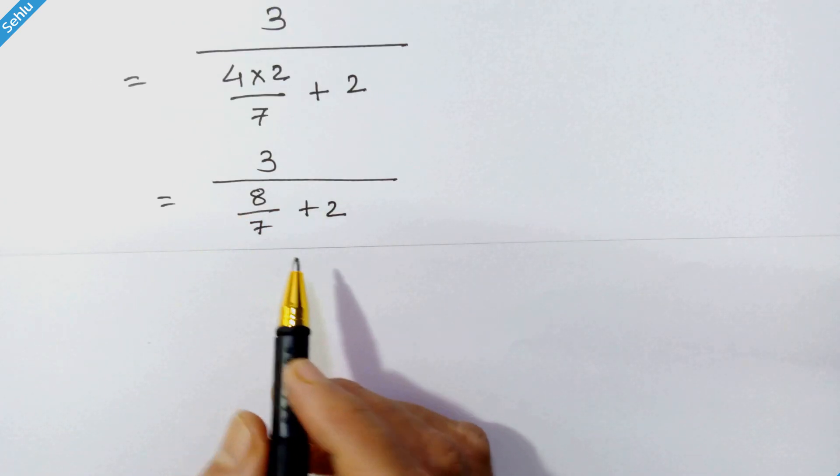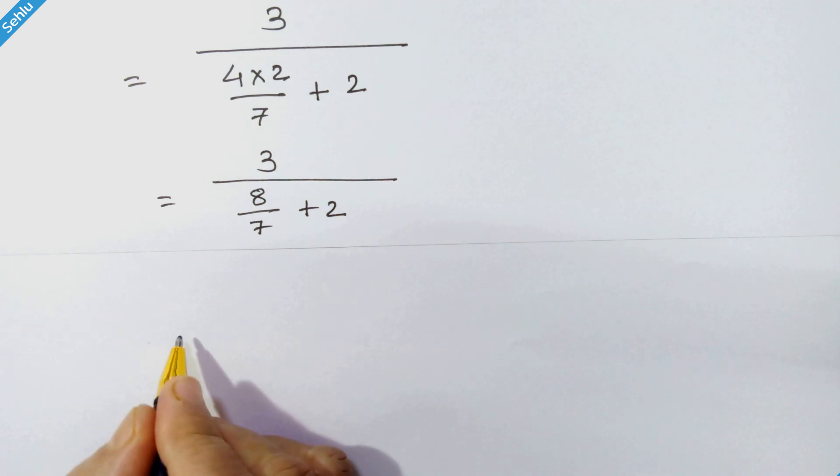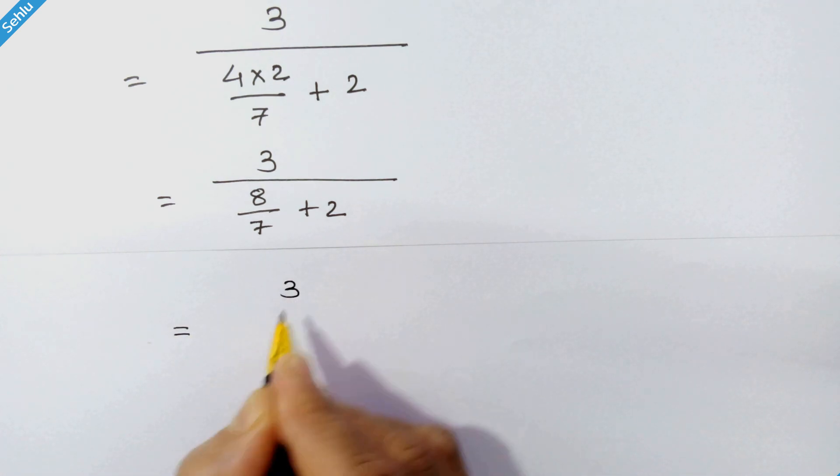Now let's simplify this part. So 3 upon 8 upon 7 plus, let's take the LCM.